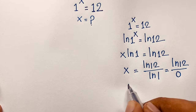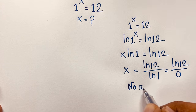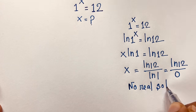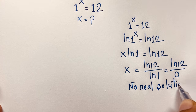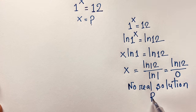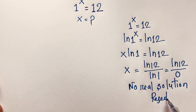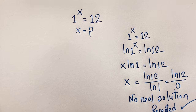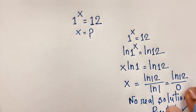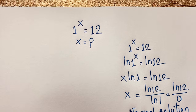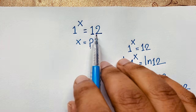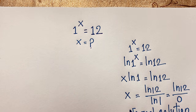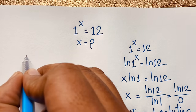So there is no real solution to this math problem — no real solution. It is rejected. But how do we solve this interesting exponential Math Olympiad question: 1 to the power x equals 12, what is x? We need another formula.